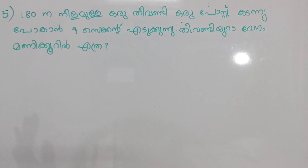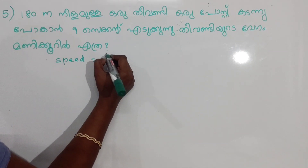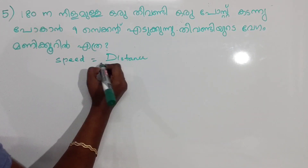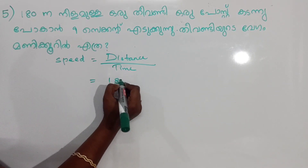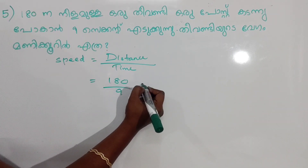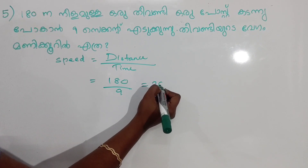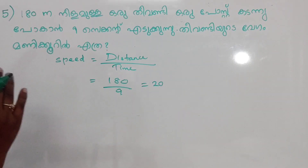Using the formula Speed = Distance ÷ Time: distance is 180 meters and time is 9 seconds. So 180 ÷ 9 gives us 20 meters per second. Converting to minutes: 20 × 60 = 1,200.